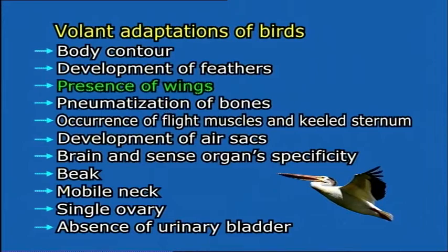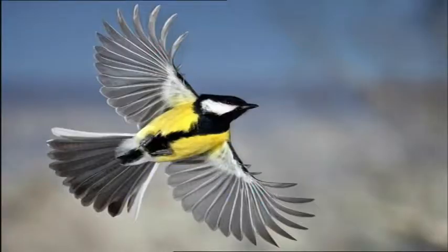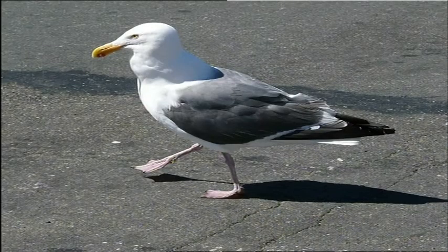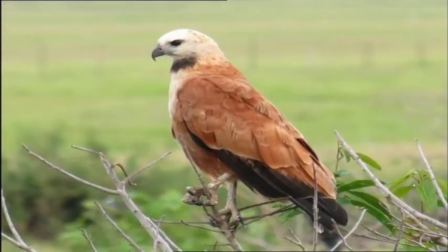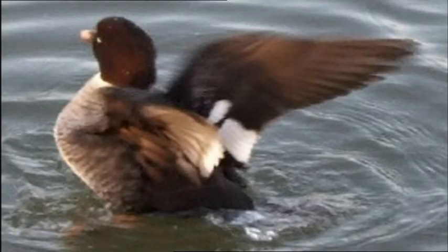Feathers form the exoskeleton of birds. Feathers are light, elastic, waterproof, and most important in flight. Presence of wings: in birds, the forelimbs are modified into wings, helping in flying. The hind limbs or legs are large and variously adapted for walking, running, scratching, perching, food capturing, and swimming.